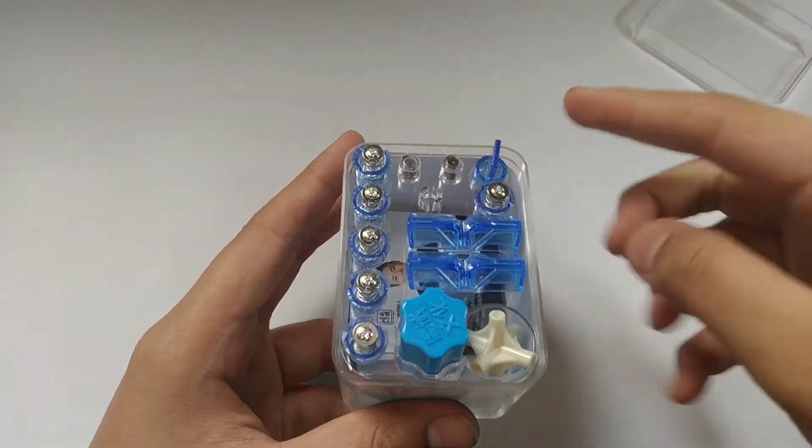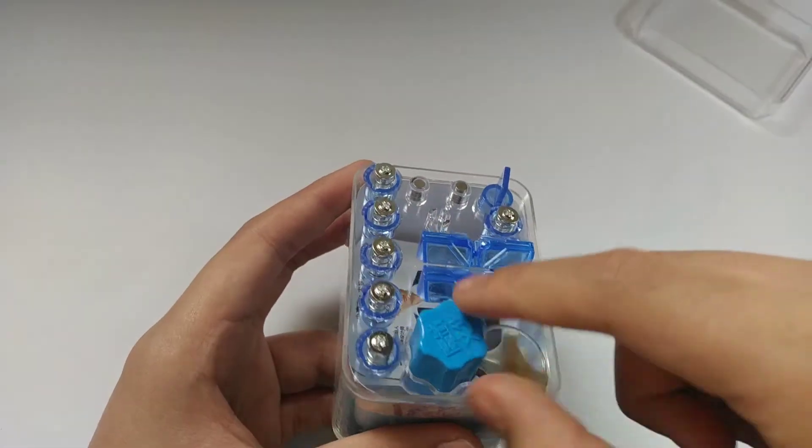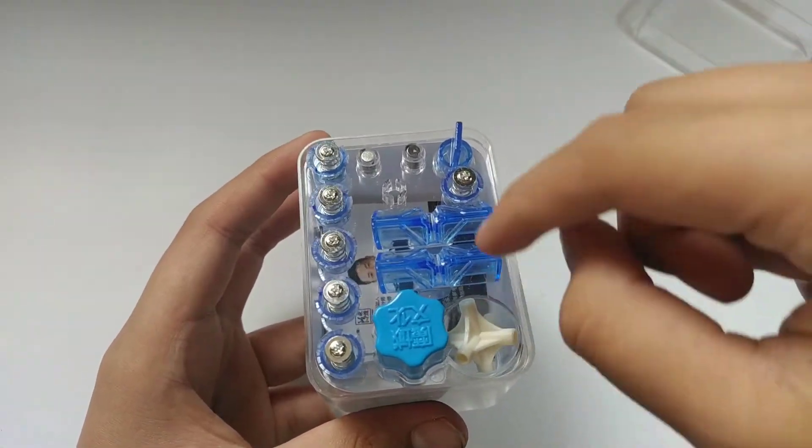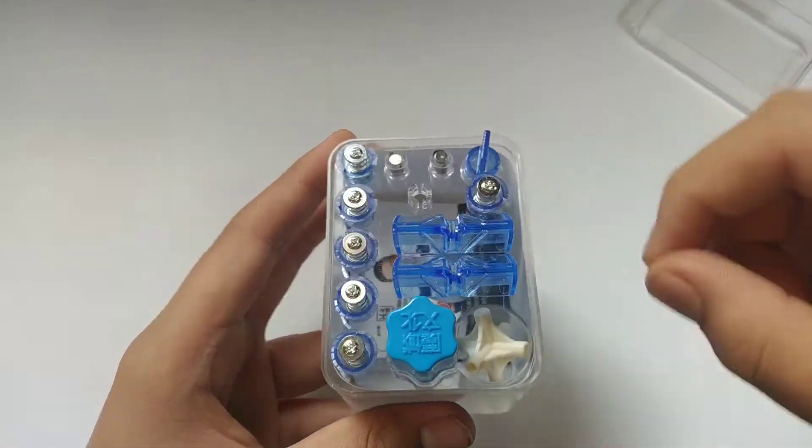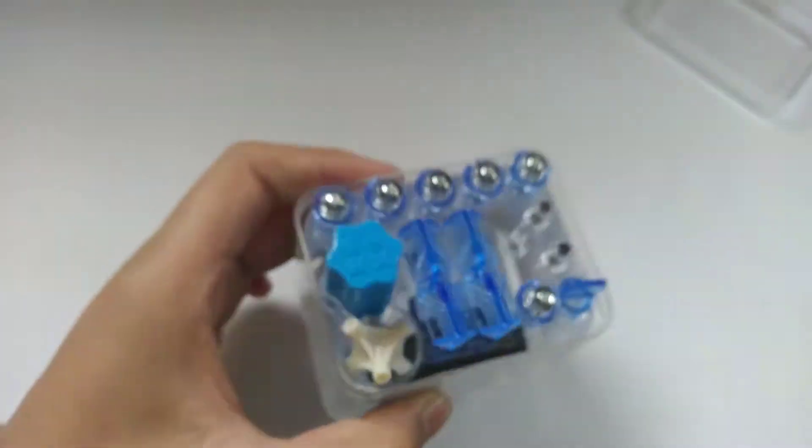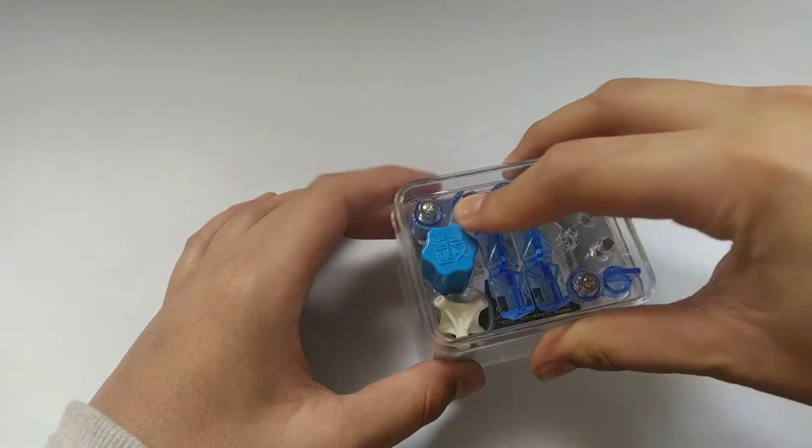You get a screwdriver and also this thing to do something with it. Underneath you get this guy which I already have. Let's close this and take a look at the cube.